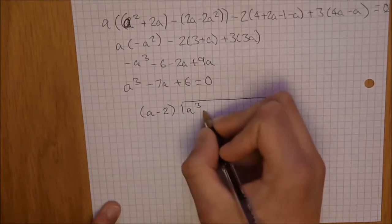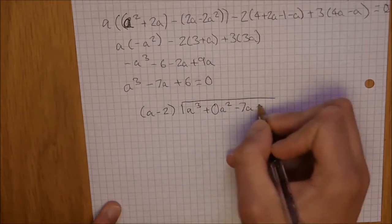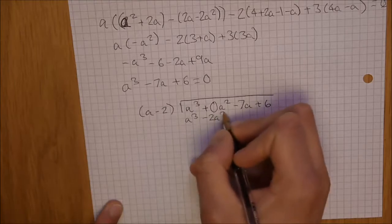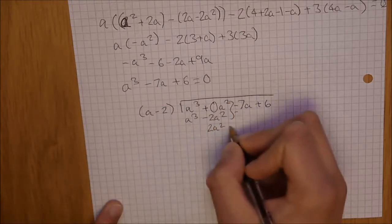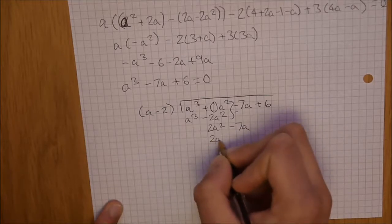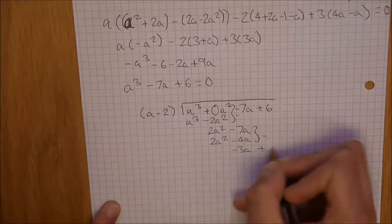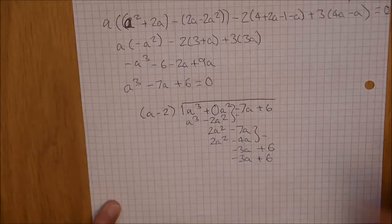a cubed, remember it's a plus 0a squared because there's no a squared term, minus 7a plus 6. So, a cubed minus 2a squared, minus the whole lot, so that's 2a squared minus 7a, 2a squared minus 4a, again minus, so that's minus 3a plus 6, minus 3a plus 6. As you can see, it goes nicely.